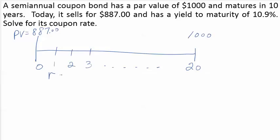We're told that it has a yield to maturity of 10.9%. Because it is semi-annual, the periodic rate would be half of 10.9%, which would be 5.45%.